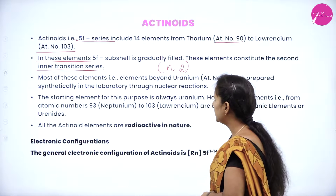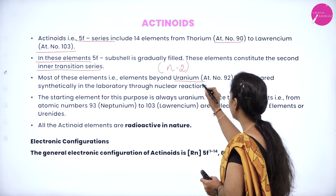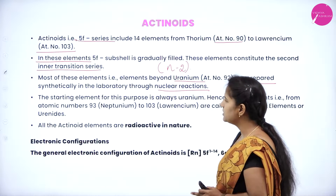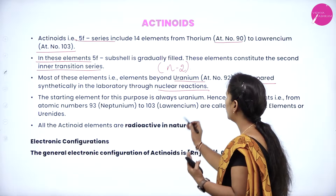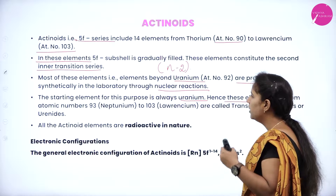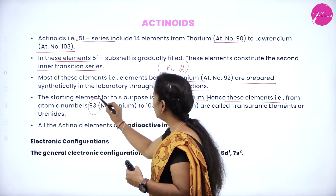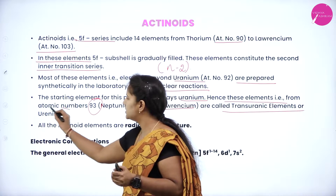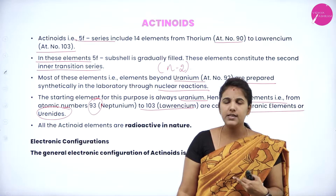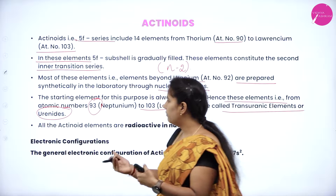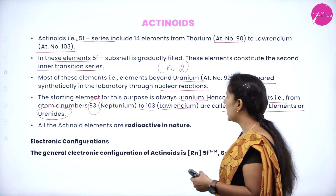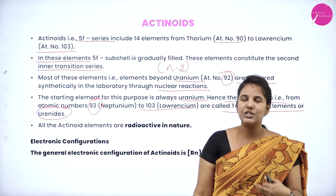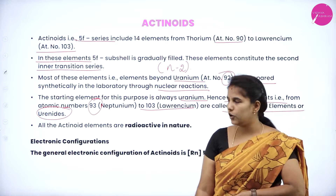Most of the elements beyond uranium are prepared synthetically in the laboratory through nuclear reactions, and the starting material for this purpose is always uranium. Hence, these elements from atomic number 93 to 103 are called transition elements or uranoids — because in the preparation of most elements, we use uranium, which has atomic number 92. All the elements in the actinide series are radioactive.